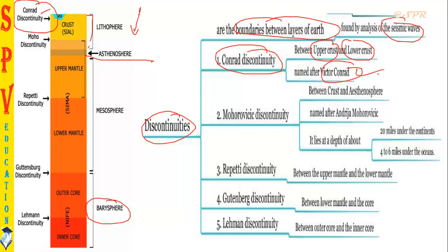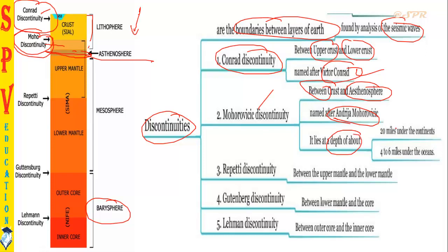Next is the Moho discontinuity — between the crust and asthenosphere. The asthenosphere is a fluid-like substance flowing below the Earth, and between the crust and asthenosphere lies the Moho discontinuity. It is named after Adrija Moho. It lies at a depth of about 20 miles on continents and 4 to 6 miles in the oceans — approximately 30 kilometers in depth.